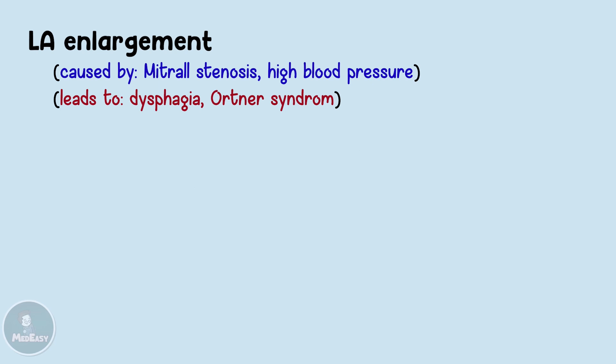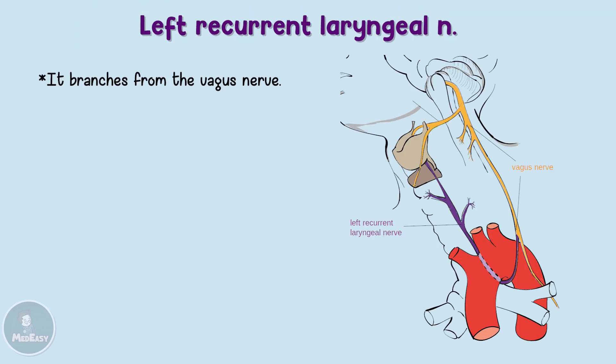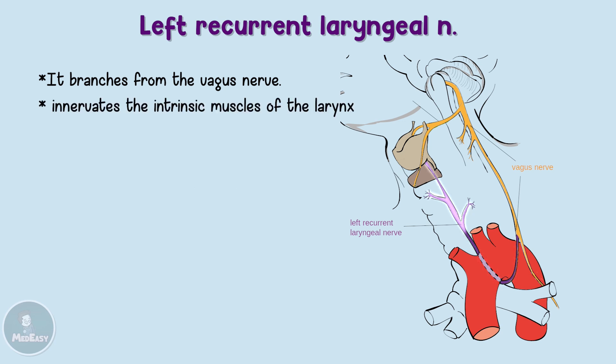To have a better understanding of this, let's discuss the left recurrent laryngeal nerve. This nerve loops around the aortic arch behind the ligamentum arteriosum, then ascends to the larynx and innervates the intrinsic muscles of the larynx.